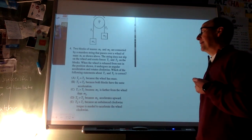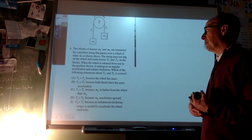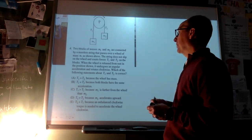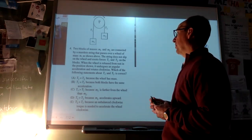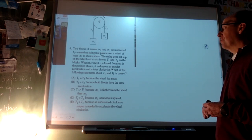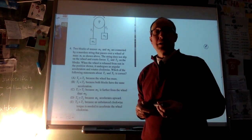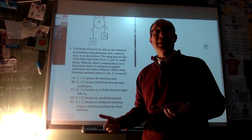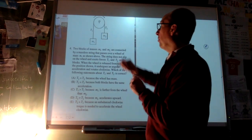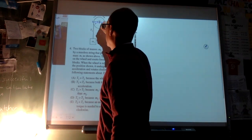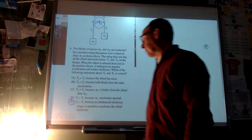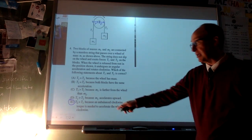AP multiple choice example: two blocks of mass m1 and m2 connected by a massless string over a wheel of mass M. The string doesn't slip. The wheel undergoes angular acceleration and rotates clockwise. Both string segments are the same distance from the center, so the net torque comes from unequal tension forces. Because it's rotating clockwise and accelerating that way, T2 is greater than T1.